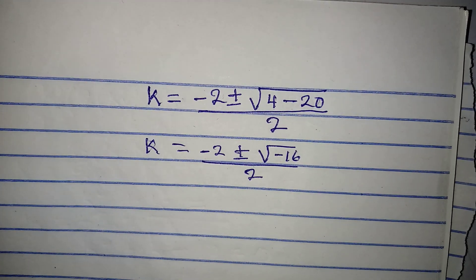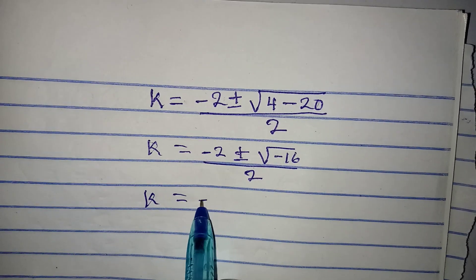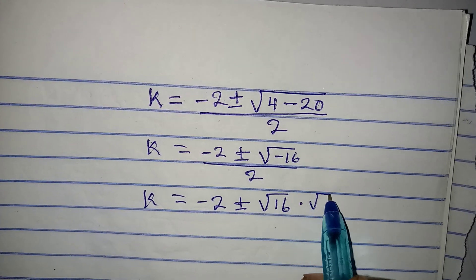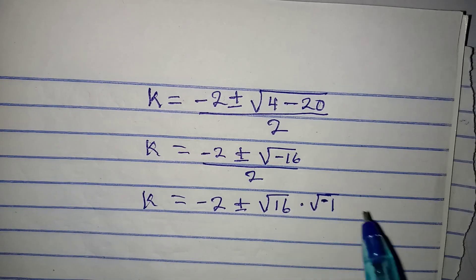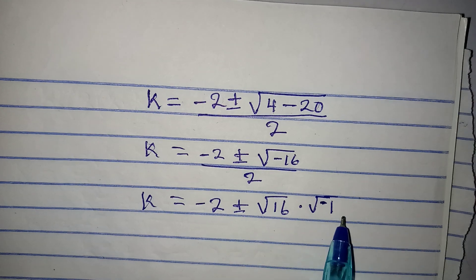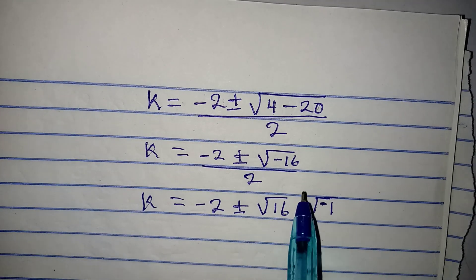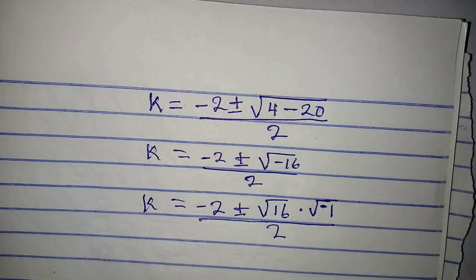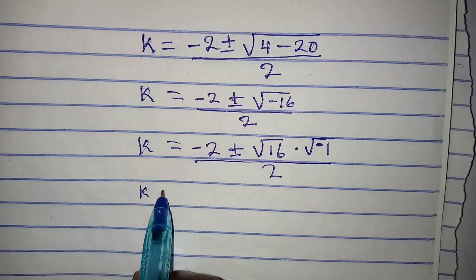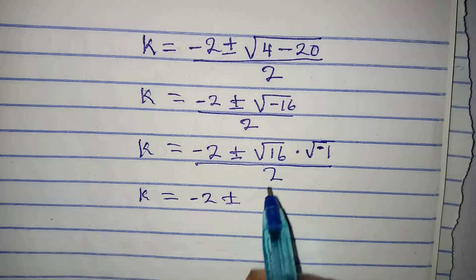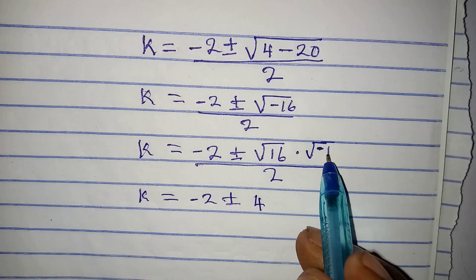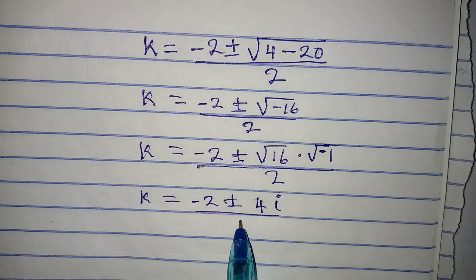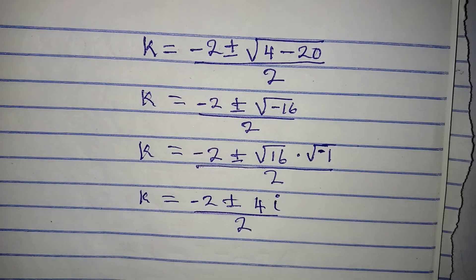We rewrite: k equals minus 2 plus or minus the square root of 16 multiplied by the square root of negative 1, all over 2. The square root of 16 is 4 and the square root of minus 1 is i, so we have minus 2 plus or minus 4i, all over 2.